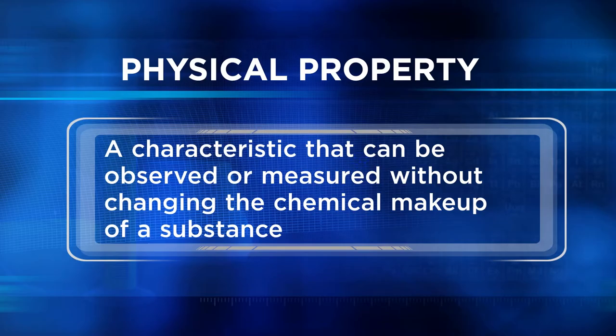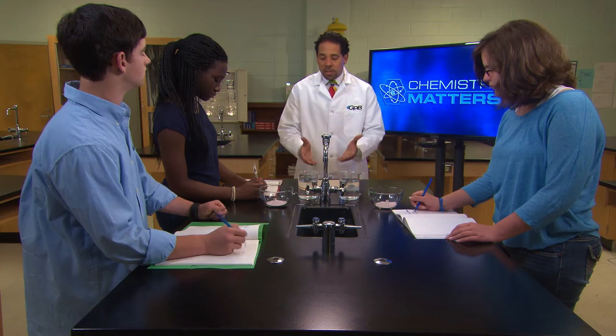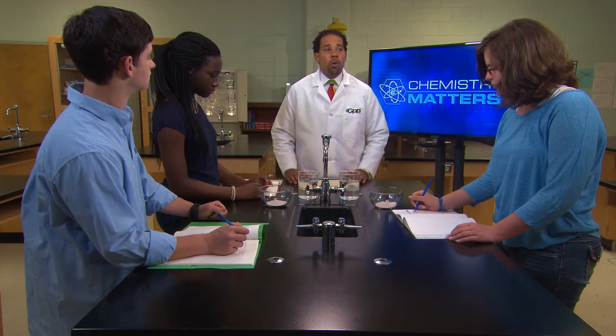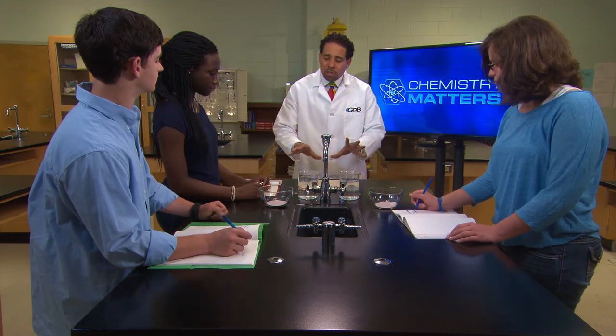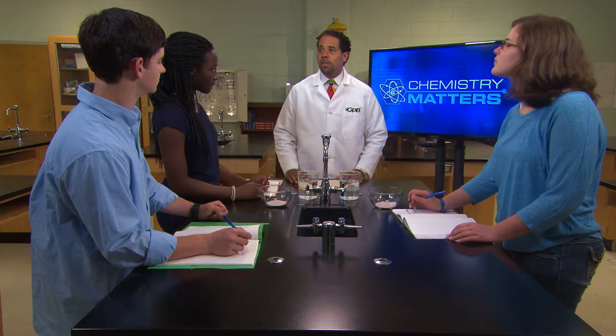Matter has different physical properties. A physical property is a characteristic that can be observed or measured without changing the chemical makeup of a substance. So this dish and this beaker of water will act as a small system model for us.